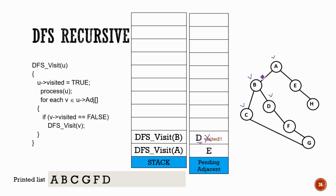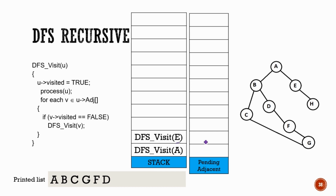We get back to A, and for node A, the node E is unvisited. So we call DFS visit E. DFS visit E is called, E will be printed, and the adjacent nodes will be discovered. DFS H is called — it will print H and look for adjacent nodes of H. Since there are no adjacent nodes of H, it will get back to E.